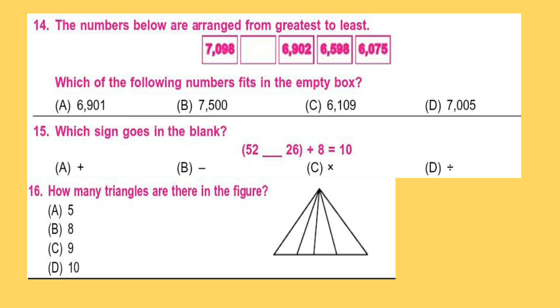Question 15. Which sign goes in the blank? 52 minus 26 plus 8 is equal to 10.